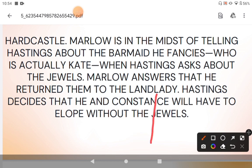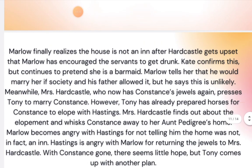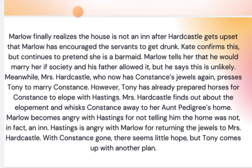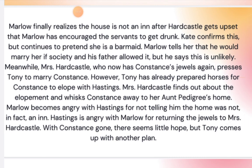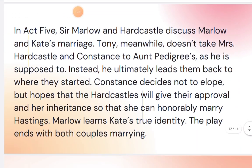In Act 4, Tony is frustrated and disgusted because his own mother keeps controlling him. He decides to take action: he prepares a chariot for Neville and Hastings so they can run away together. On the other side, Charles Marlowe and Kate are developing feelings for each other. Mrs. Hardcastle is alarmed when she discovers Tony's schemes. Eventually the situation becomes very complicated, but Tony finally realizes his mistakes and acknowledges his role.